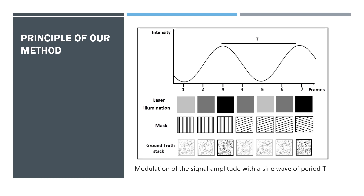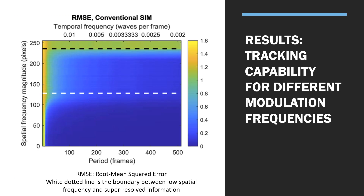By projecting light at high frequency, we can see higher-frequency information from the sample that we would not have seen otherwise. In 2D SIM, we illuminate the sample with stripes that we shift and rotate three times, giving us nine raw images as you can see on the left. We then feed these nine images into a reconstruction algorithm which generates a super-resolved image on the right. Since we need nine images to reconstruct one super-resolution image, the temporal resolution of SIM is worse than conventional microscopy, where we only need to acquire one image per time point.